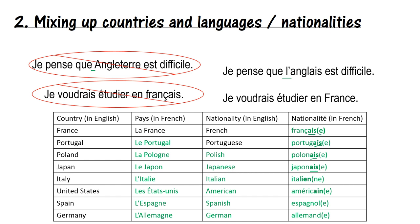You can also see similar endings: L'Espagne, Allemagne, Pologne. Otherwise the country endings are a little random. We've also got similar endings on Italian and American — they sound similar but one has EN and one has AIN, so the spelling differs slightly. There are some helpful ending patterns, but ultimately you need to learn them.